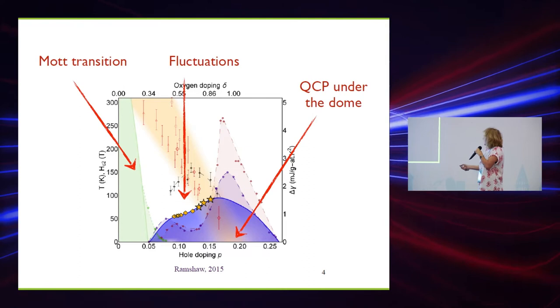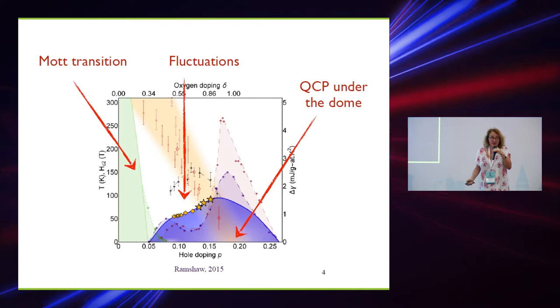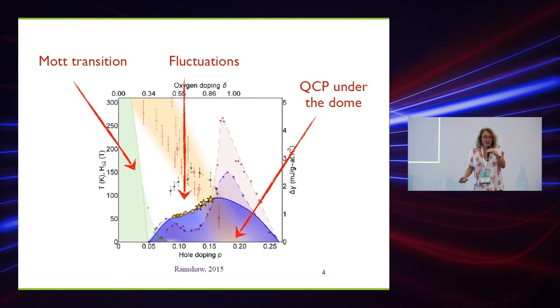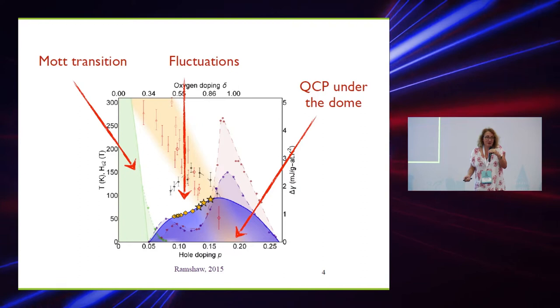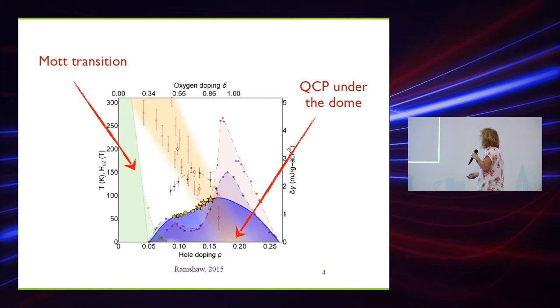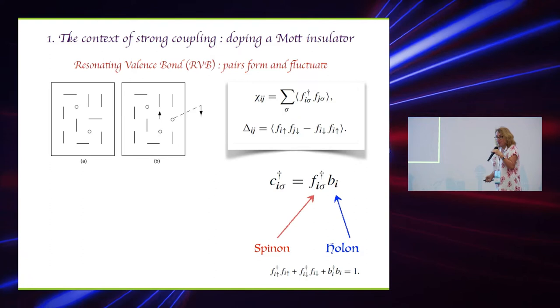Last but not least, you have fluctuations in the system for many reasons. And one of the reasons is when you approach a Mott transition, your particles, they localize, and they localize the phase fluctuate. So basically, all the fields in the system will have some phase fluctuations over there, which we will see are quite important.